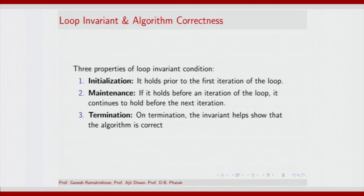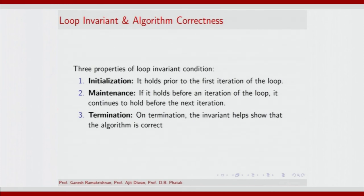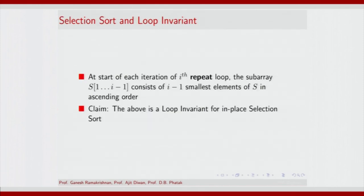You need to prove that after each iteration of finding the min and swapping, this condition is maintained. At termination, the loop invariant helps show that the algorithm is correct because the sorted sub-array in the invariant condition turns out to be the entire array itself. We will quickly show that all three properties — initialization, maintenance, and termination — are satisfied for this loop invariant property.